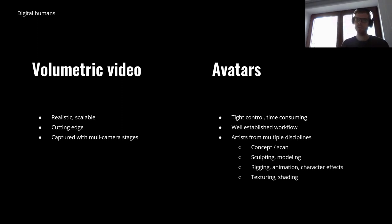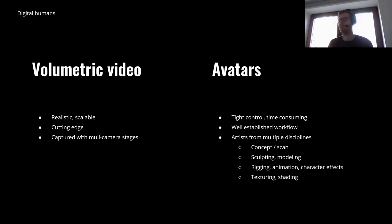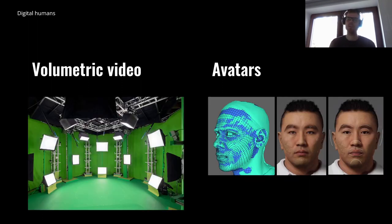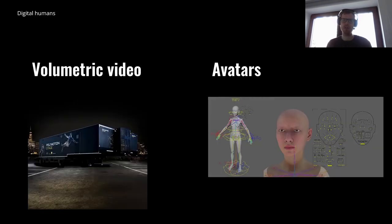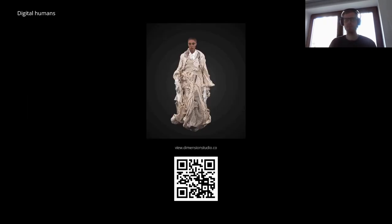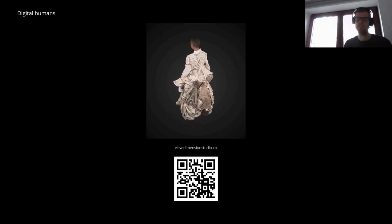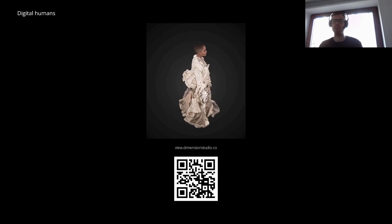The highest quality volumetric video is usually captured with multi-camera stages. On the other hand, the avatar pipeline, broadly speaking, consists of the outlined steps. Multi-camera systems are very interesting, but we will leave that to the next presentation by Andrew Saarl from IO Industries. In this example, you can see our mobile stage as well. On the right side there is a typical animation rig for avatars. In either case, the result is a realistic animated 3D human which can be integrated into a virtual environment.